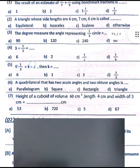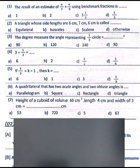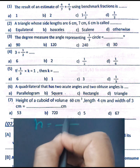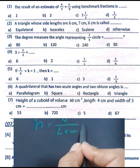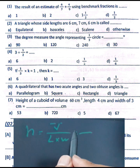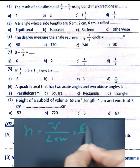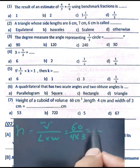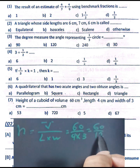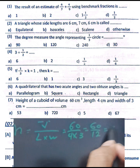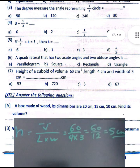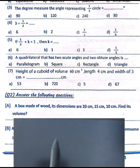Question number seven: the height of a cuboid whose volume is 60 cubic centimeters, length 4 centimeters, and width 3 centimeters. We find the height by dividing the volume by length times width. So 60 divided by 4 times 3 equals 60 divided by 12, which equals 5 centimeters.